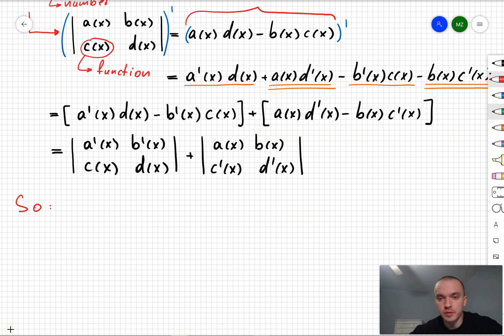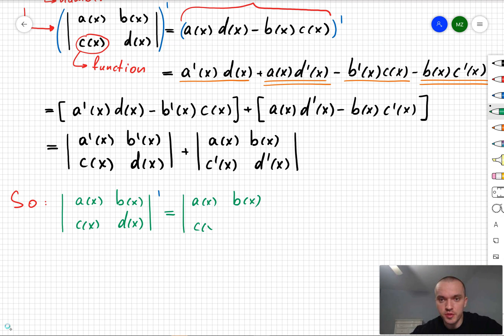So we can see if we want to find the derivative of a 2 by 2 determinant where each of the entries are the functions, then it is going to be just equal to the sum of two determinants where in the first determinant your first row is going to be taken with primes and for the second determinant your second row is going to be taken with primes.